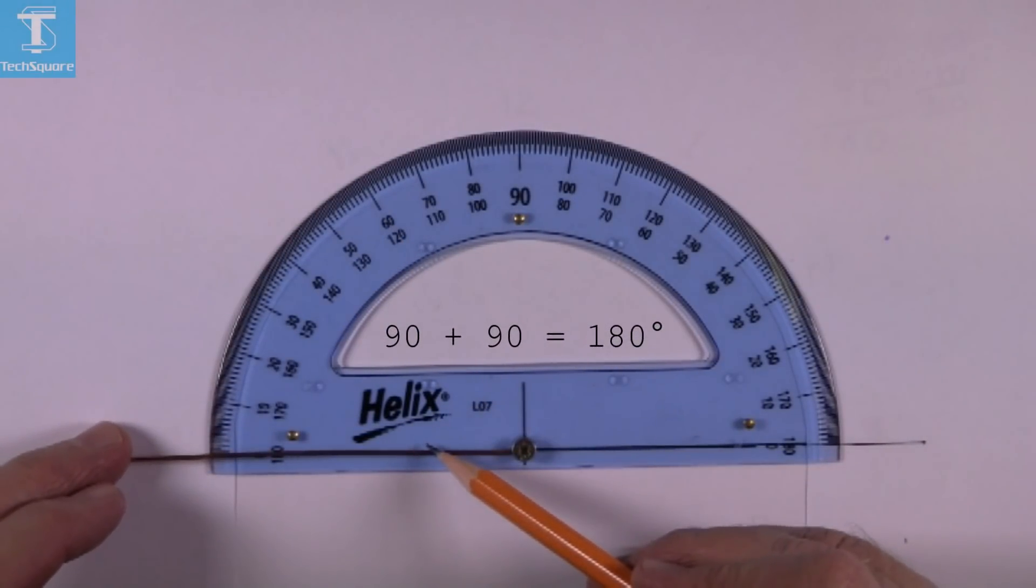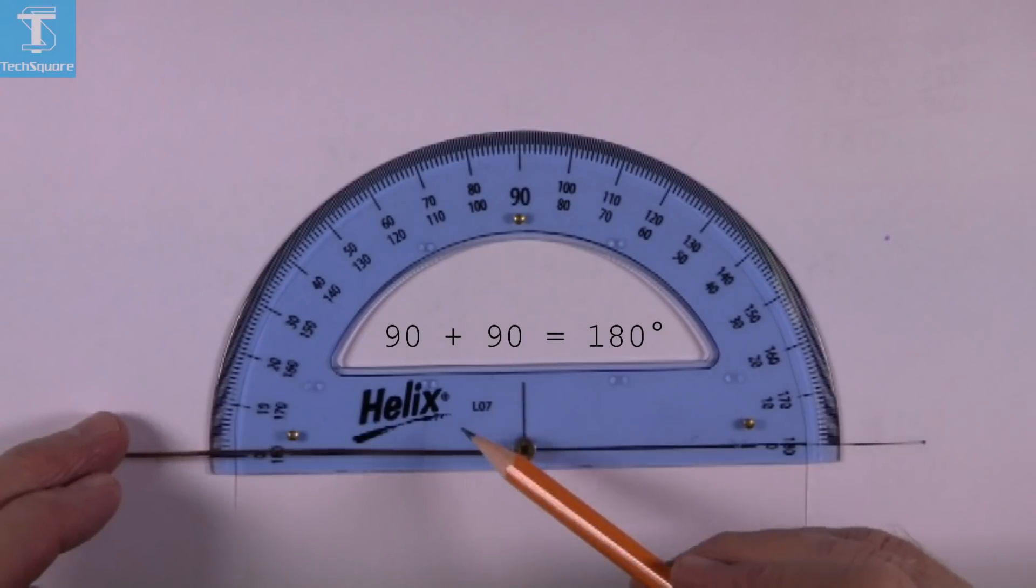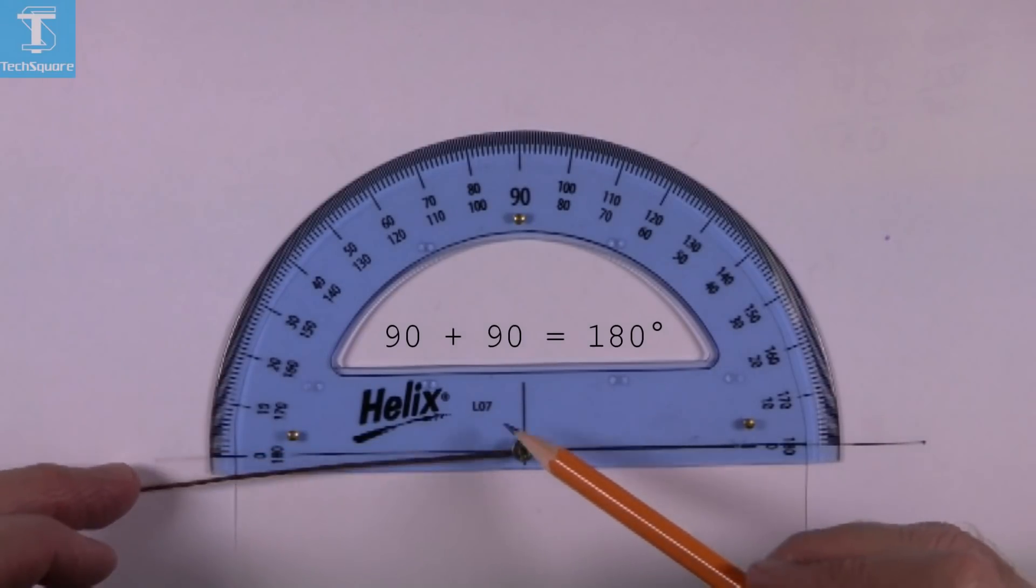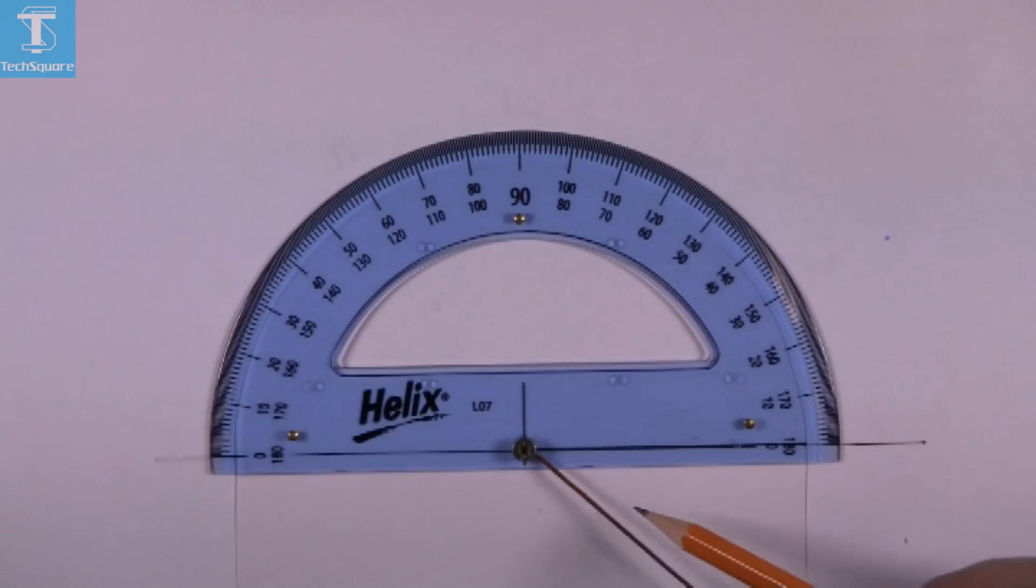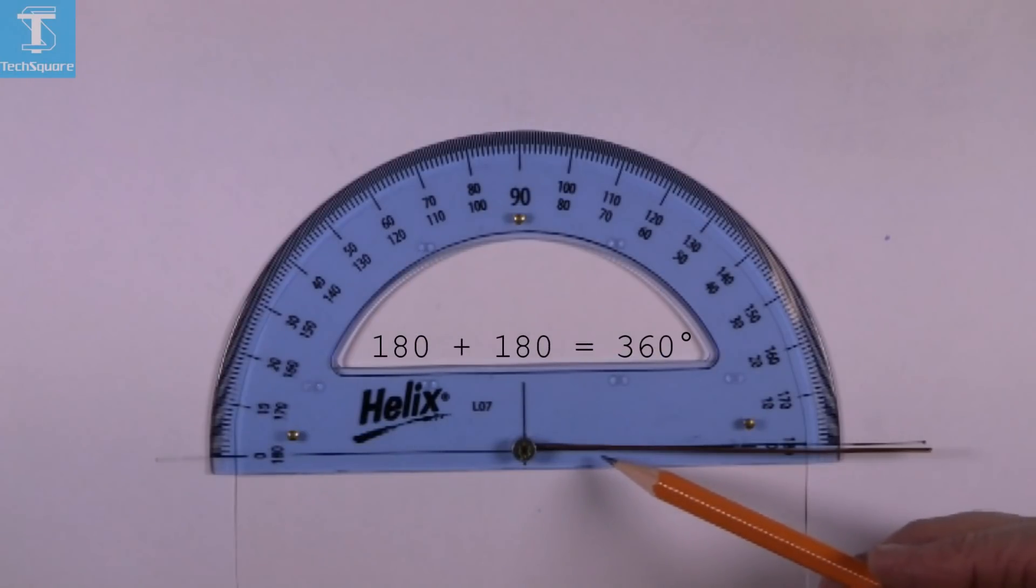So if we move it on around to here, the two 90s together make up 180 degrees in total. And when I continue right around until I get where we started, we have 180 plus 180, so the total angle is 360 degrees.